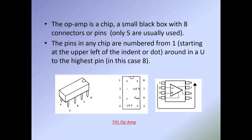Looking at the inputs: pin 2 is our negative input, pin 3 is our positive input, and pin 4 is what we call VEE — our negative voltage, which is negative 15 volts in this case. Pin 7 is our positive 15 volts, which is VCC, and pin 6 is our output.